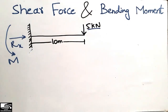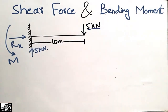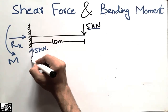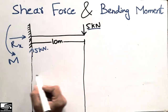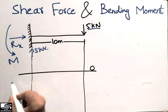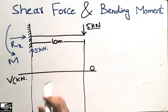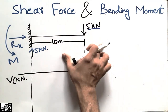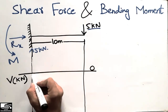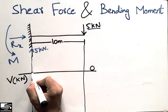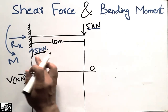To draw the shear force and bending moment diagram, the support reaction is 5 kilonewtons. We extend the reference lines — these are the two reference lines of this beam. The shear force axis is in kilonewtons. Starting from the left side, the shear force is 5 kilonewtons acting in the upward direction.